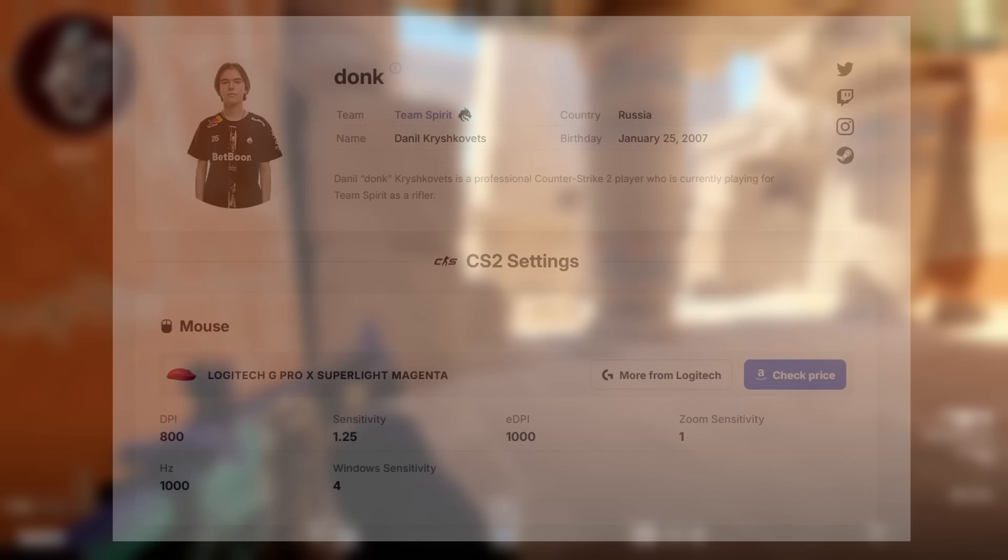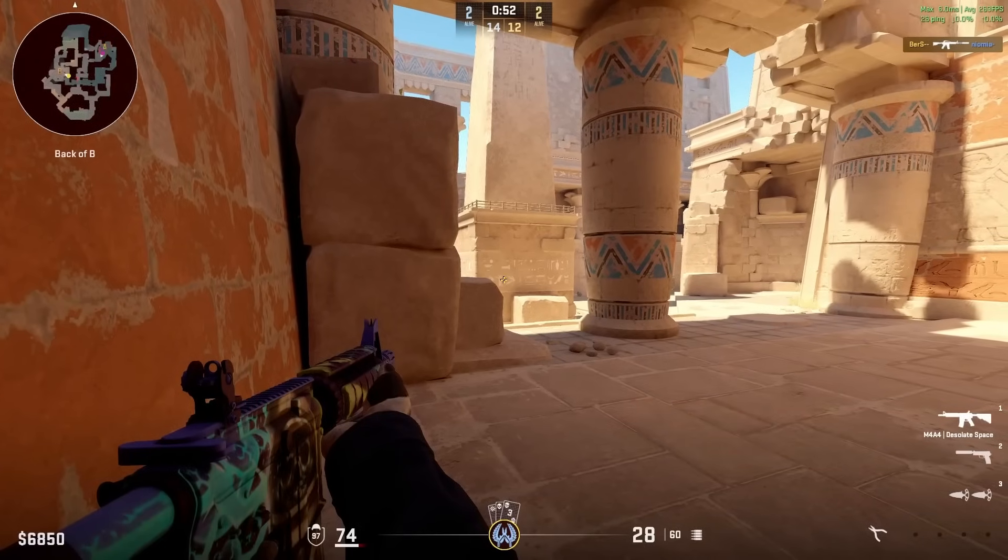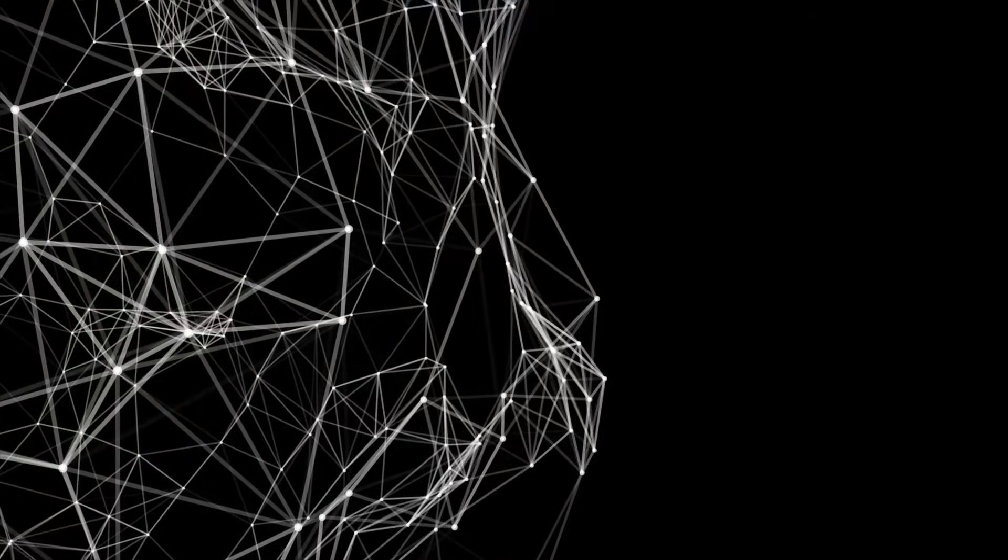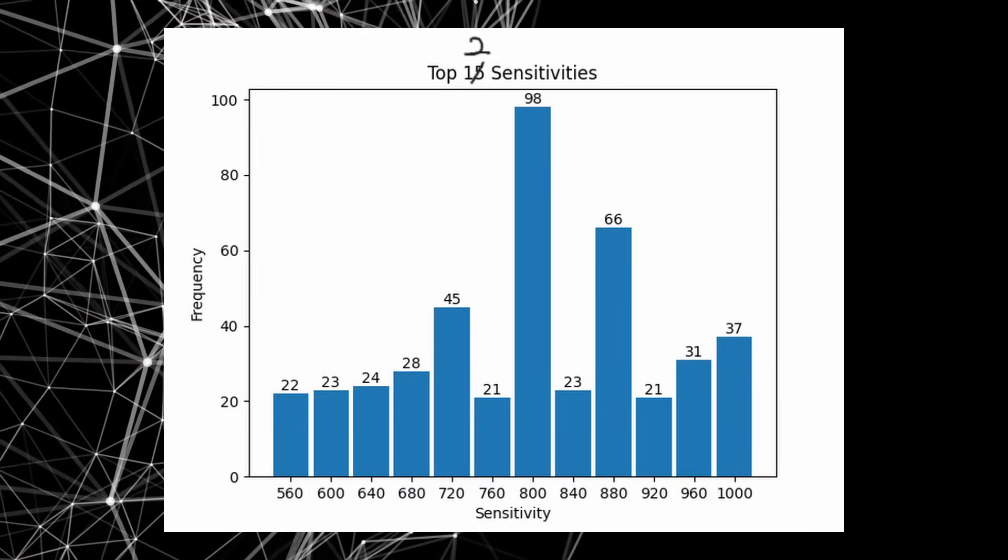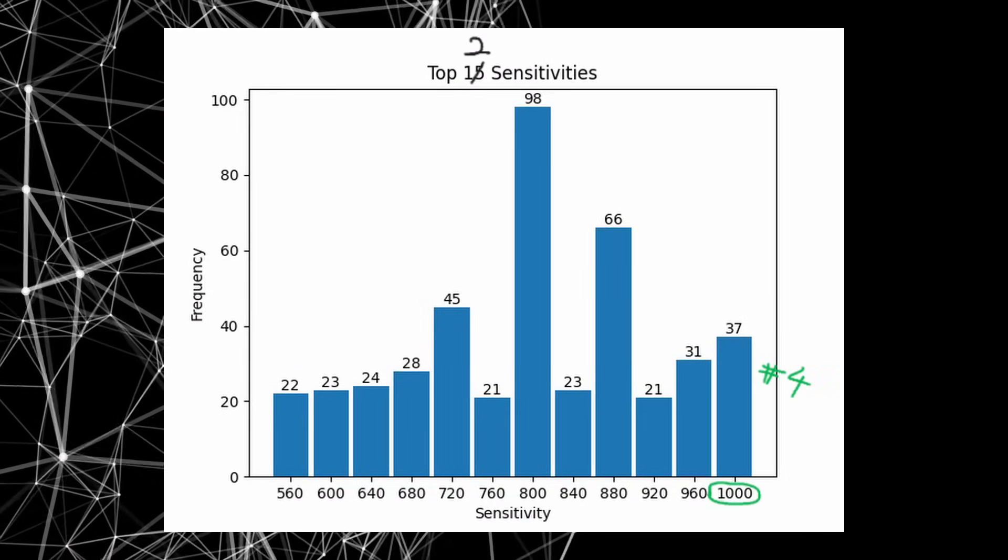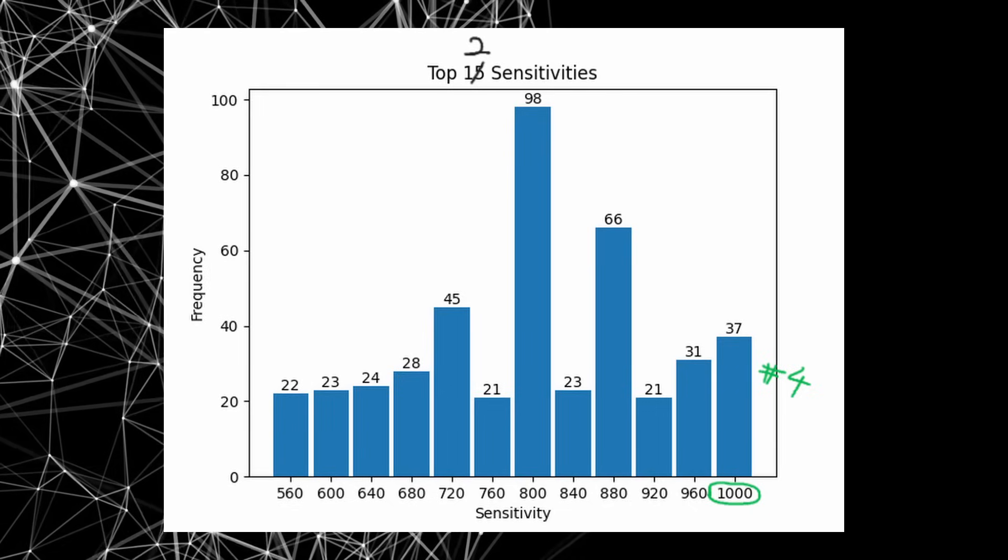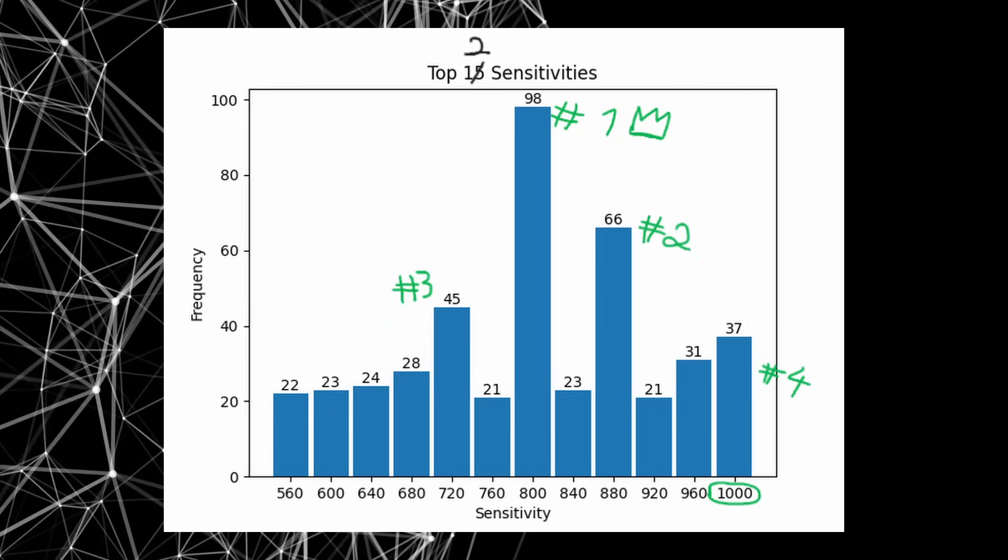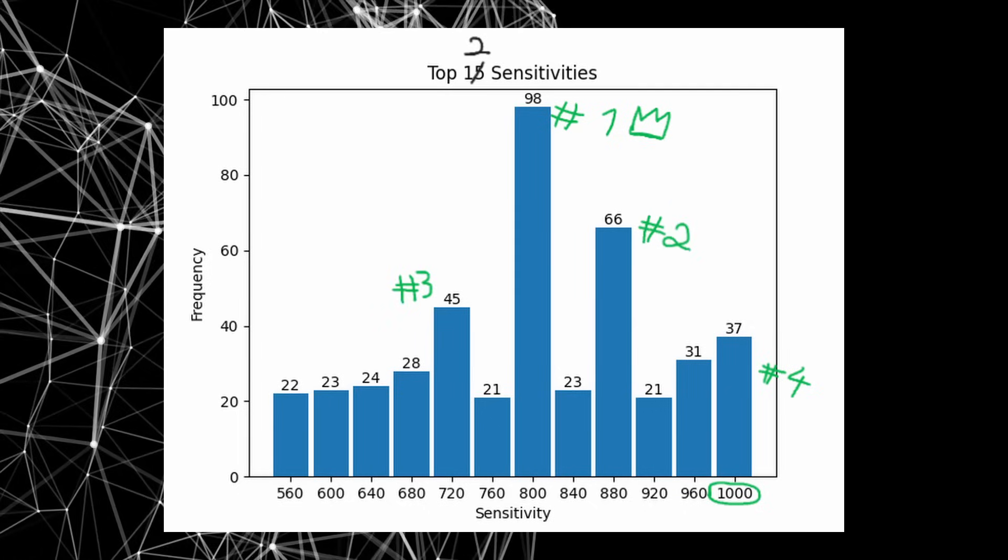In an effort to come to a better conclusion, I finally plotted the 12 most common sensitivities and interestingly enough, even though most sensitivities fall into the 688.5 to 960 range, 1000 eDPI is still the fourth most popular value with 800, 880 and 720 effective DPI being the top 3.